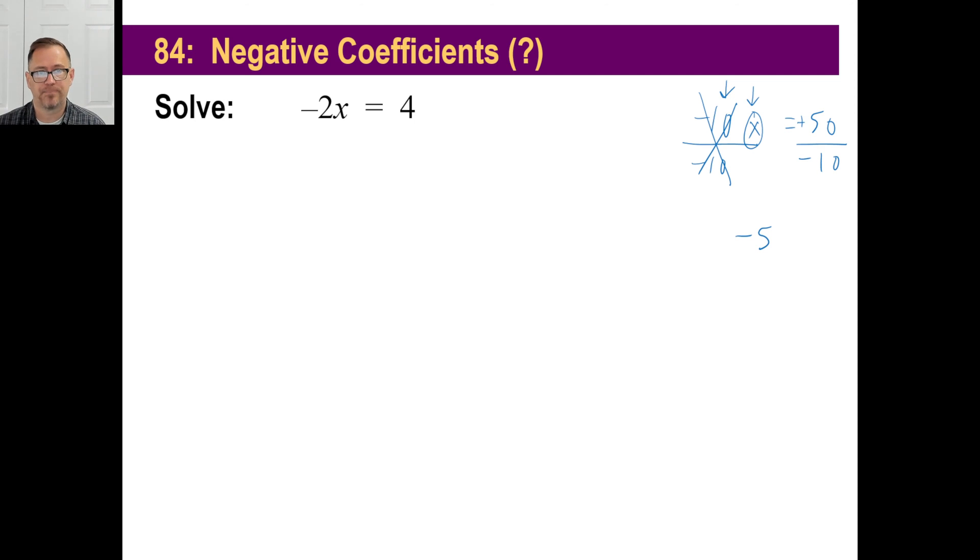So let's do one. Negative 2x is equal to 4. Now, you're going to get to a point where you got this really quickly. Boom. Let's just pretend like you didn't do it. You didn't know, and so we're going to do it the old-fashioned long way. So without even thinking, we just go, oh, immediately divide by a negative 2. Divide by a negative 2. We know that's gone. So we have just an x. We have a positive 4 divided by a negative 2. Opposite signs, so the answer is negative. That's all there is to it. There you go.